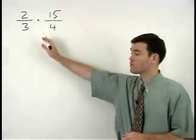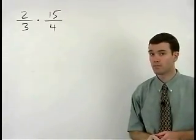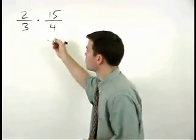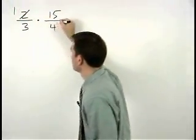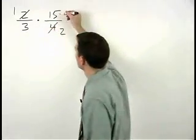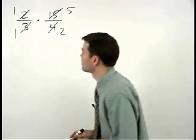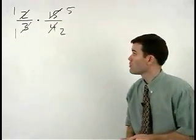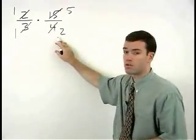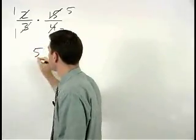When multiplying two fractions together, remember that we can cross cancel. In this problem, the 2 and 4 reduce to 1 and 2, and the 15 and 3 reduce to 5 and 1. Next, we simply multiply across the numerators and multiply across the denominators, and we have our answer, which is 5 halves.